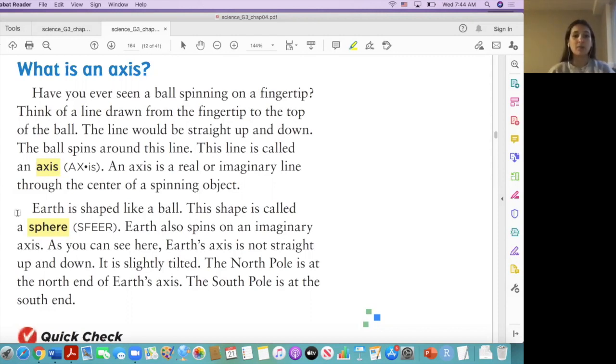So earth is shaped like a ball. This shape is called a sphere. Earth also spins on an imaginary axis. As you can see here, earth's axis is not straight up and down. It is slightly tilted. The north pole is at the north end of earth's axis. The south pole is at the south end.